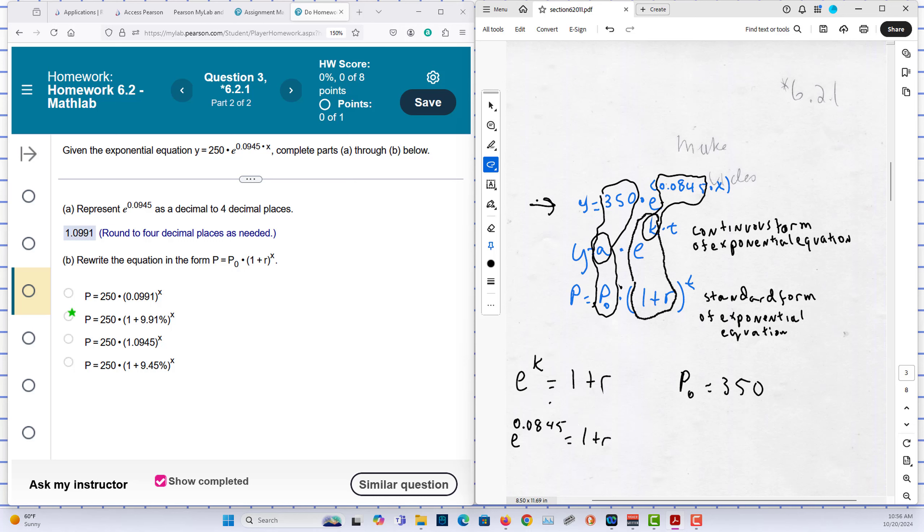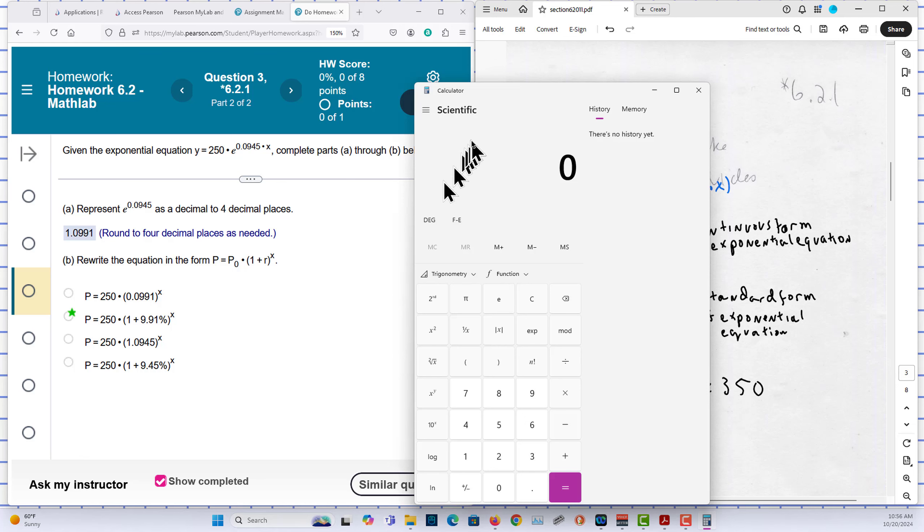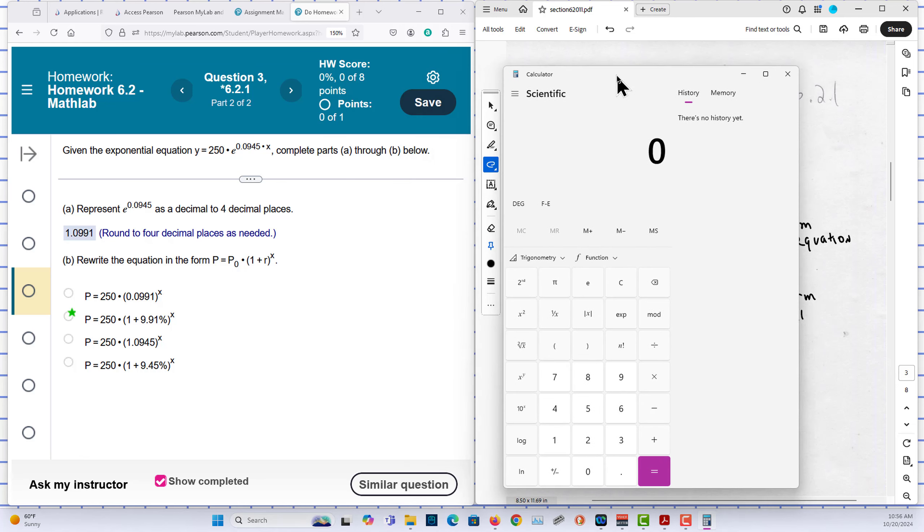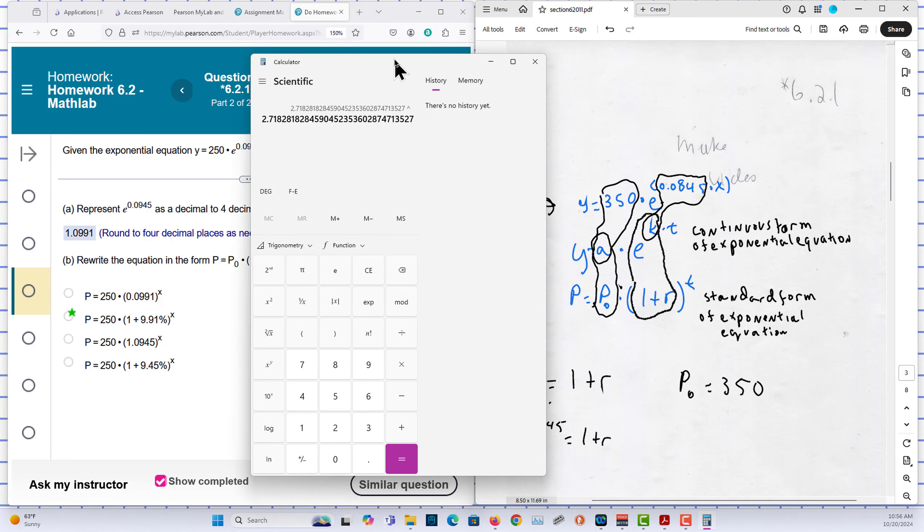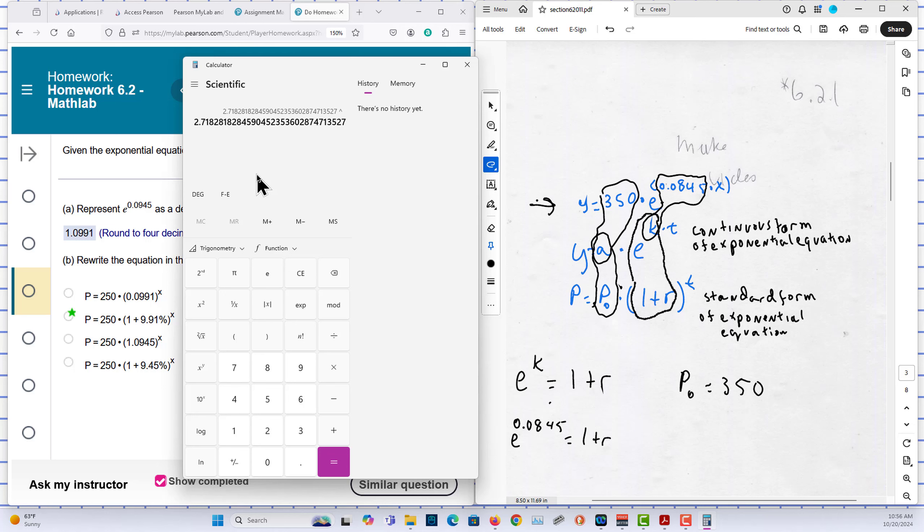And we can use a calculator to find out what e to the k is. You can see our e here. And it's being raised to a power. And that power in my problem example here is 0.0845.